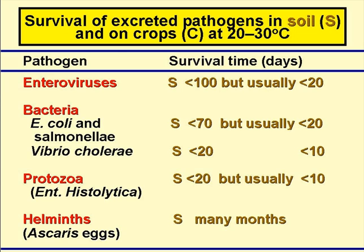Now some information on how long excreted pathogens survive in soil and on crop surfaces. First, how long they survive in the soil — these figures are for warm climates with temperatures in the range 20–30°C. Enteroviruses can survive for up to about 100 days, but usually only for 20 days at most. Bacteria such as E. coli and Salmonella for up to 70 days, but usually only for 20 days. Vibrio cholerae survives for up to 20 days, but usually less than 10 days. Protozoan cysts and oocysts are roughly the same as Vibrio cholerae, and helminth eggs — ascaris eggs in fact — can survive for many months, even years.